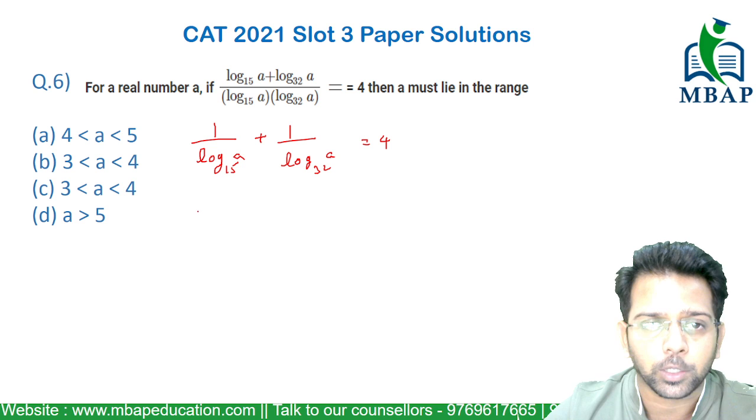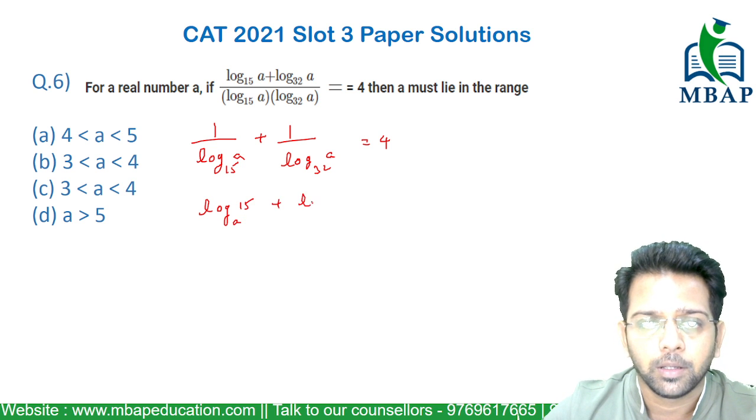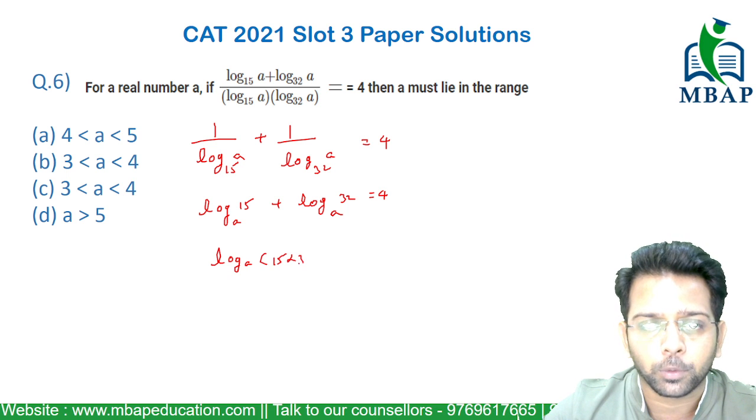Taking the reciprocal, it is going to become log of 15 to base a plus log of 32 to base a should be equal to 4, which means it is log to the base a of 15 into 32.